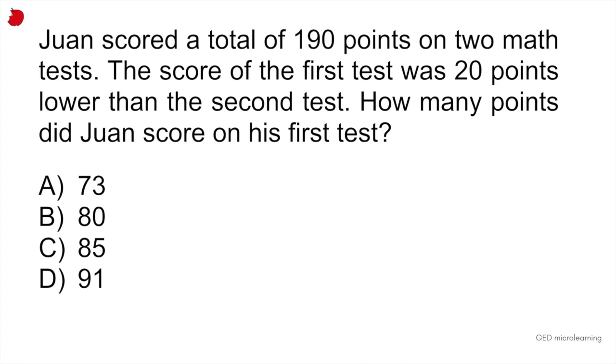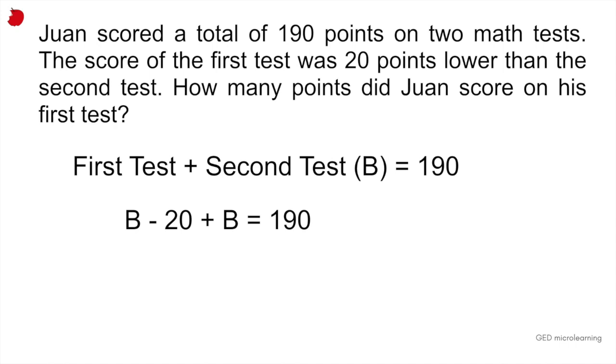All right. So here, you can do this problem in two ways. The first one would be using algebra and the second way would be using the actual answer options that they're giving you in the question. So basically they told us that the first test plus the second test is going to equal 190. So your equation should be like the top row that you see there.